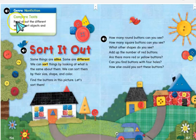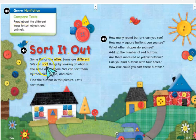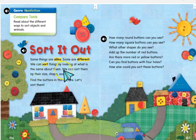Sort it out. Read about the different ways to sort objects and animals. Some things are alike, some are different. We can sort things by looking at what is the same about them.